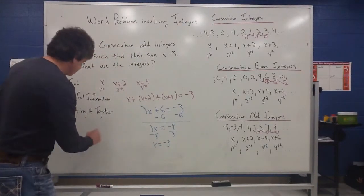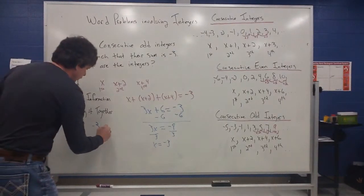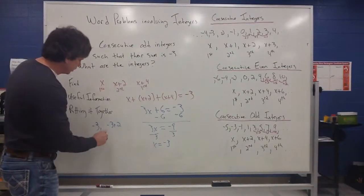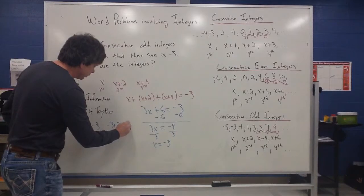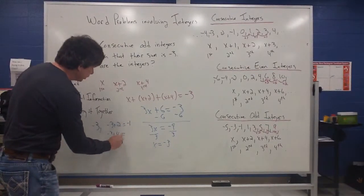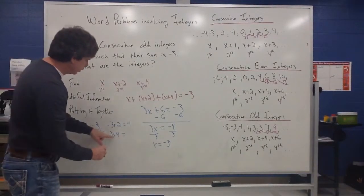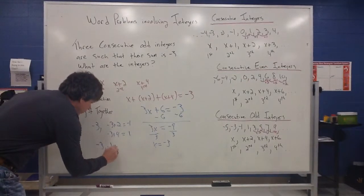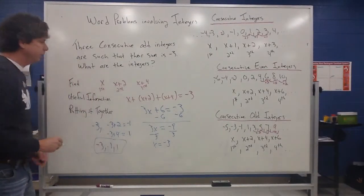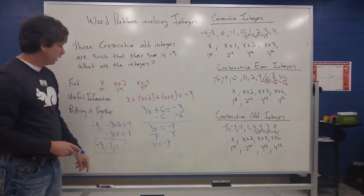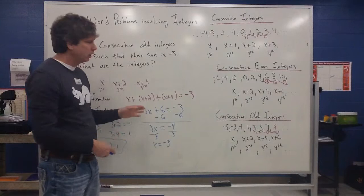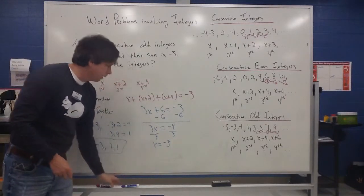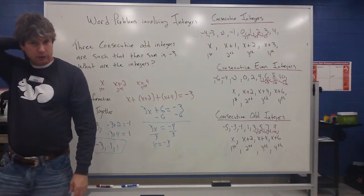So negative 3 is the first integer. Then negative 3 plus 2 gives negative 1 as the second, and negative 3 plus 4 gives positive 1 as the third. So our three consecutive odd integers are negative 3, negative 1, and 1 — and their sum is negative 3. You don't have to use algebra to solve it; you can play with the pattern and make some notes. Stay tuned and we'll try a few more.